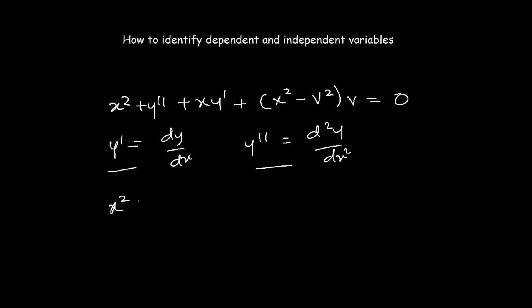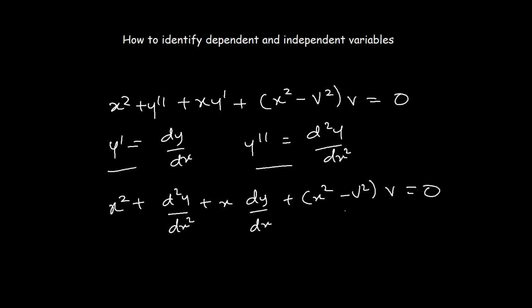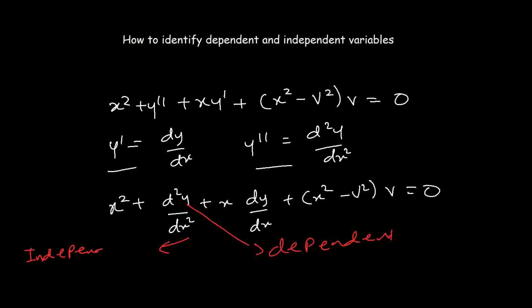And y double prime equals the second derivative of y with respect to x. Substituting these expressions into the equation, we get x squared times d²y/dx², plus x times dy/dx, plus (x² minus d²) times y equals 0. After doing this, we can see that y is the dependent variable and x is the independent variable.